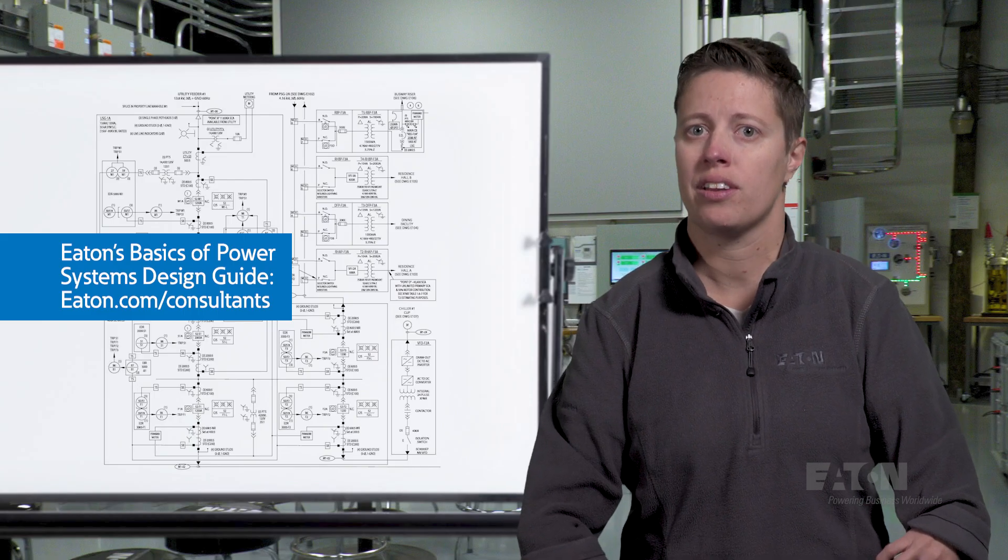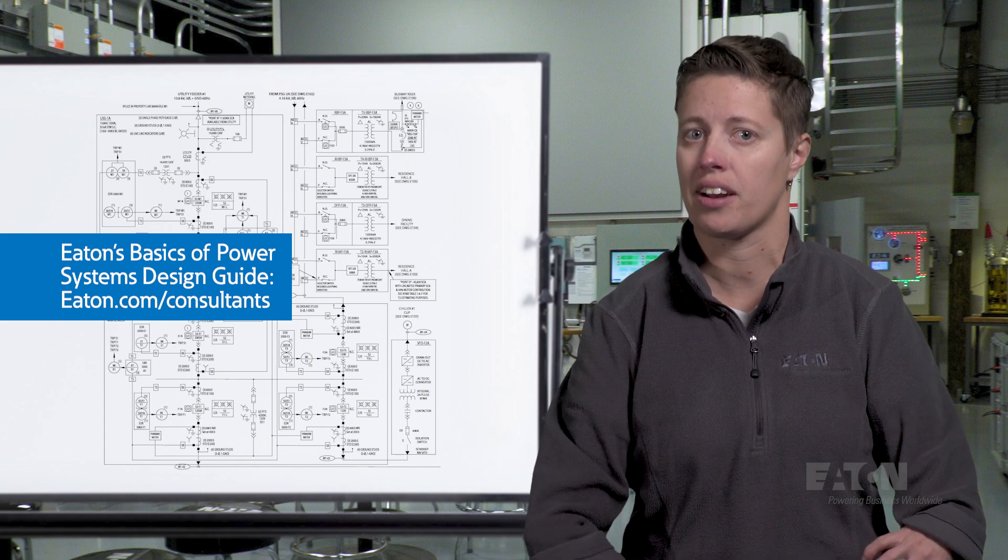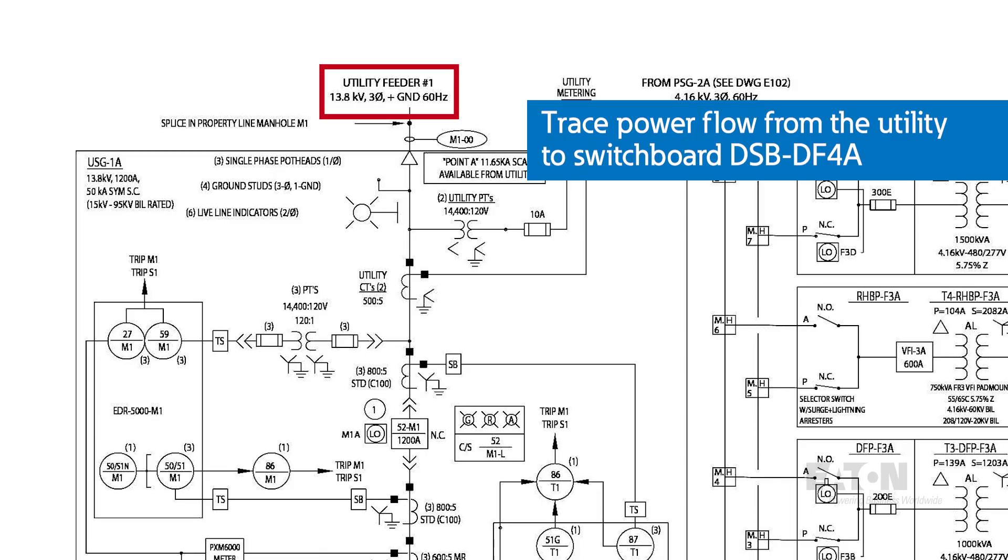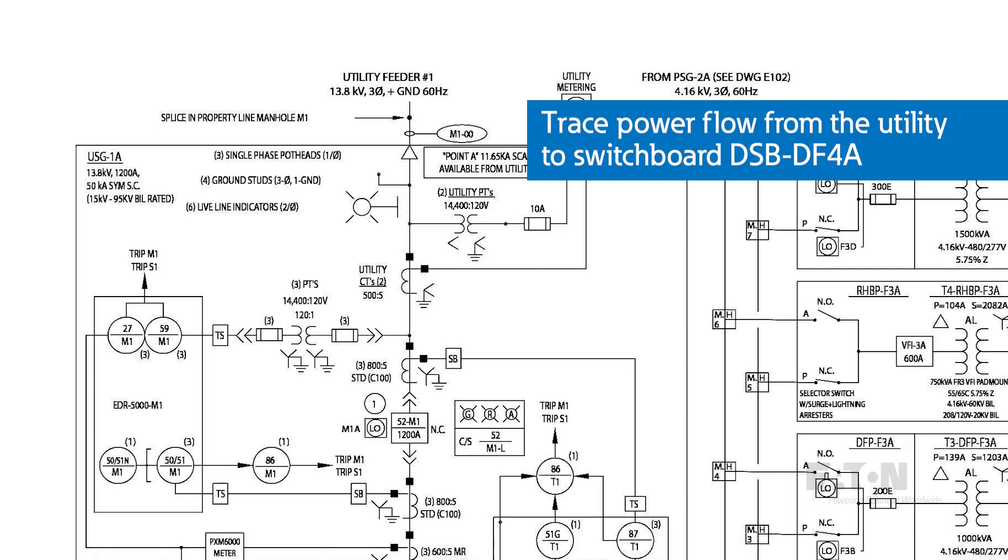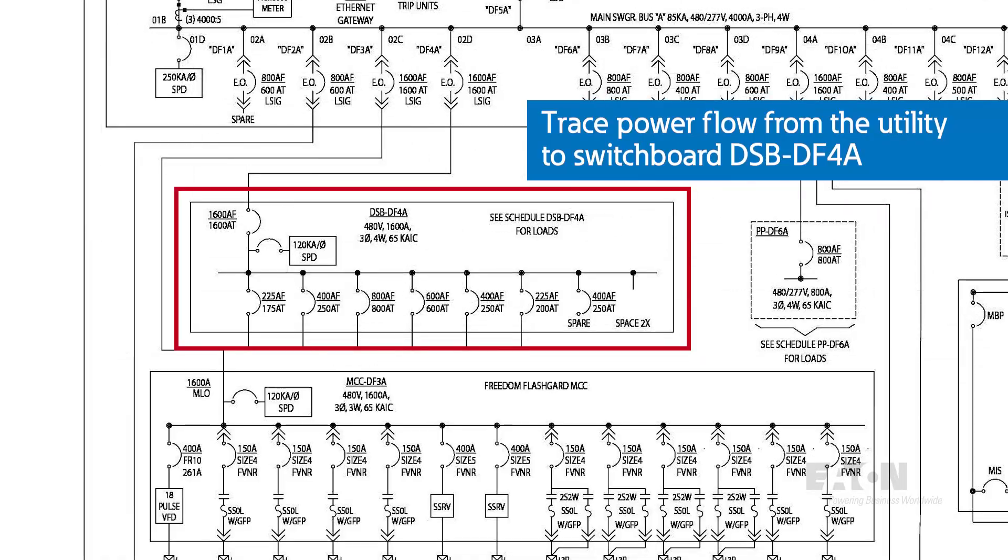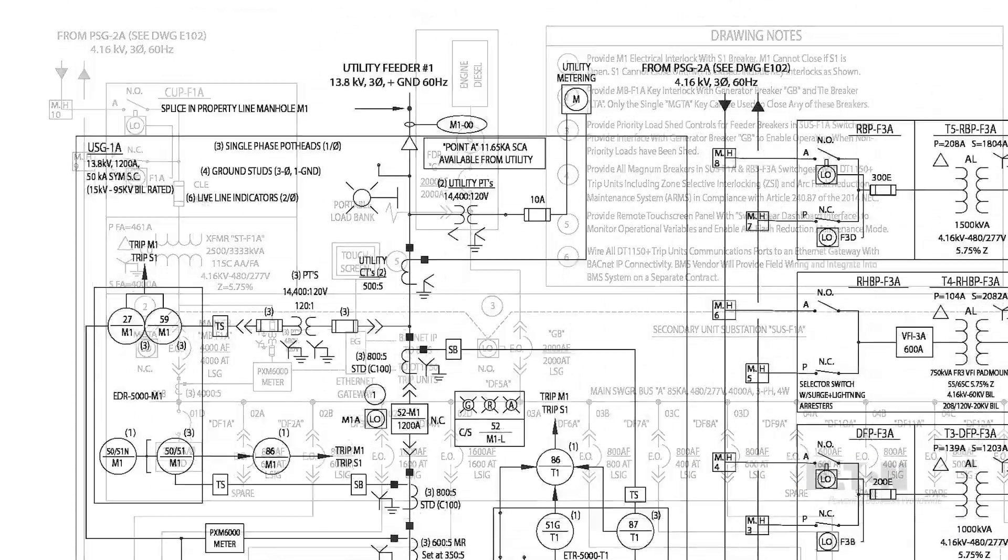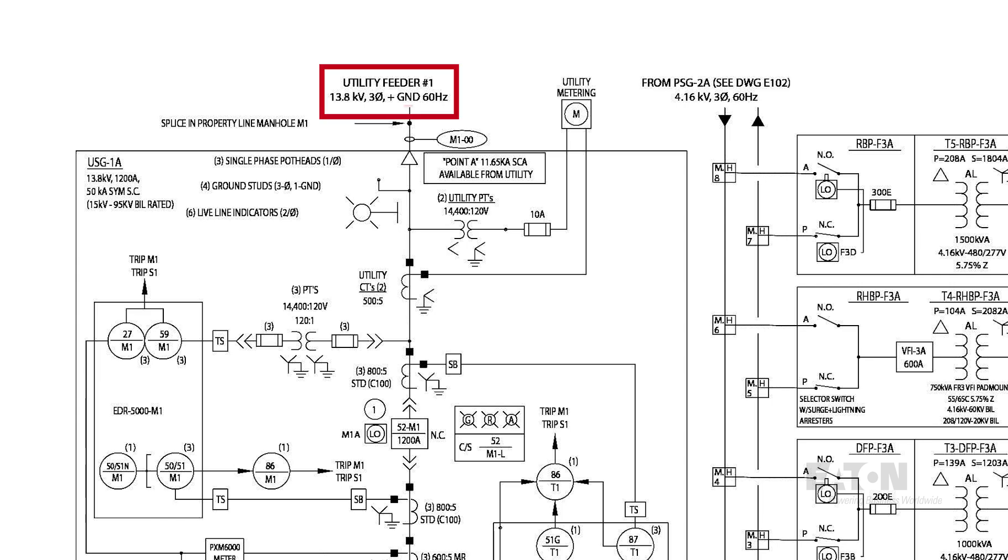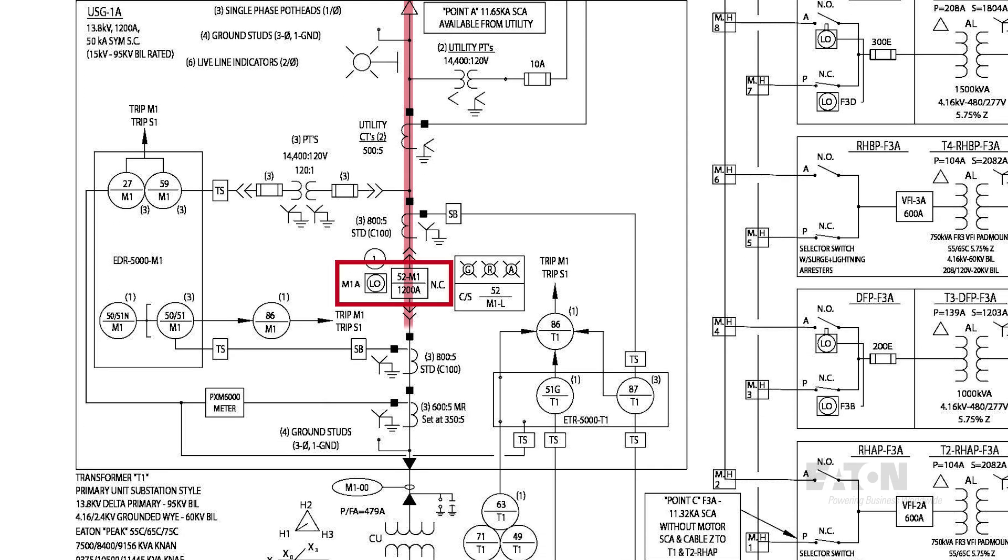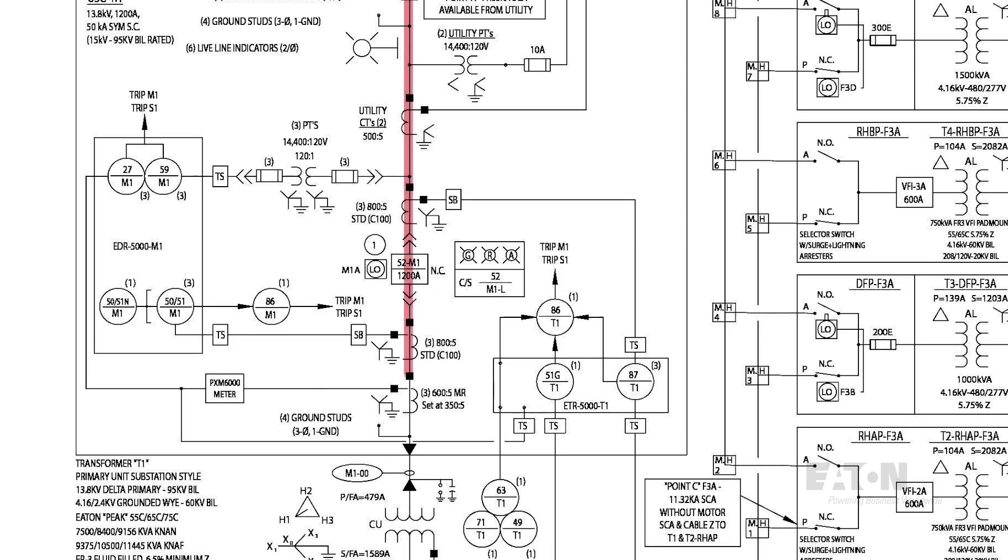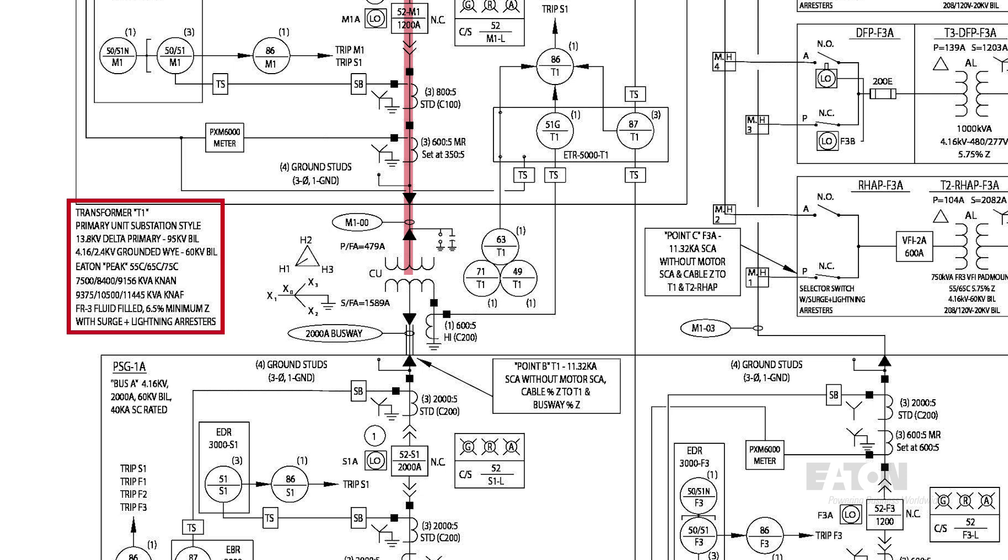Let's walk through a more complicated single line from Eaton's Basics of Power Systems Design Guide. We'll start at the utility and work our way down. Our goal will be to understand how power flows to switchboard DSB-DF4A. We can see that the utility power comes in at 13.8 kV from utility feeder number one. It comes into medium voltage switchgear USG-1A, which has 1200 amp bus. The power flows through this medium voltage breaker labeled 52-M1, which is protected by an EDR5000 feeder protection relay using CTs and PTs. The power flows to the primary side of transformer T1.